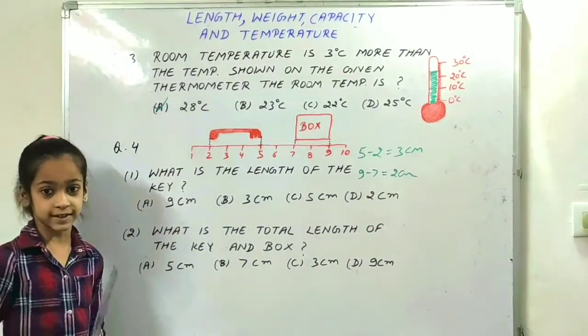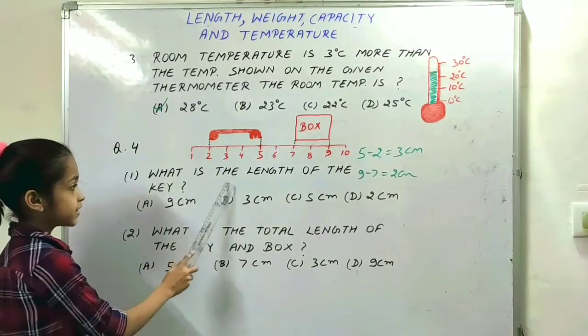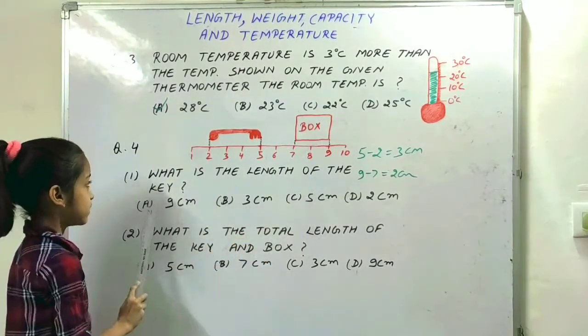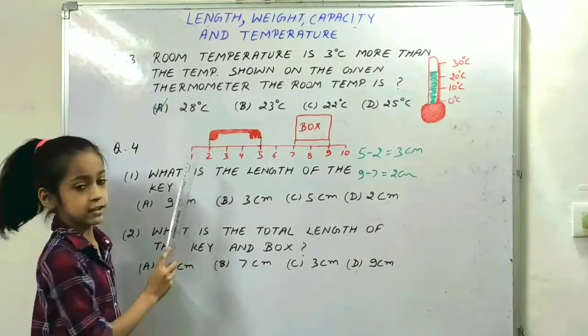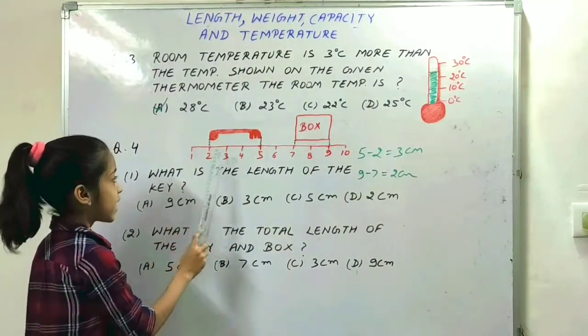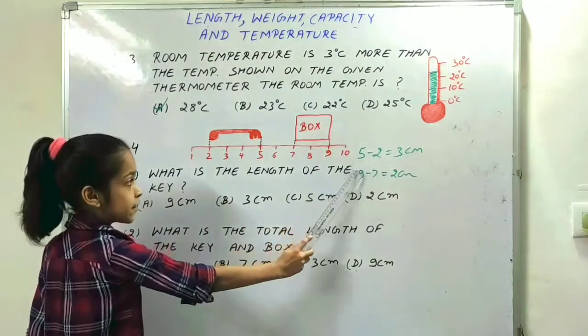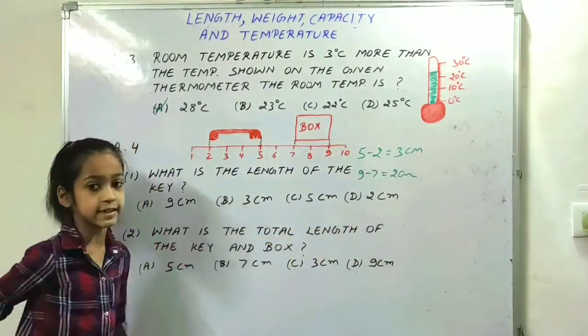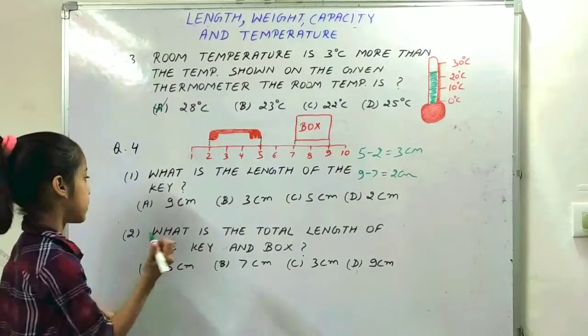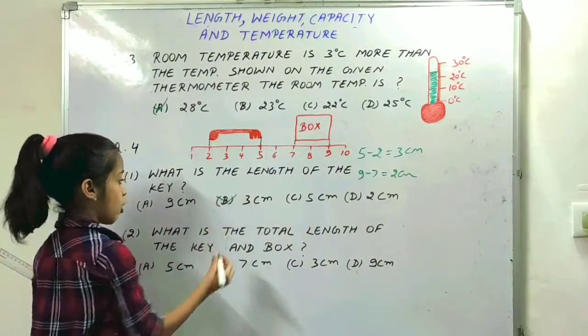Our next question is: what is the length of the key? Here is the key. The key starts from 2 and ends on 5. So 5 minus 2 is equal to 3 centimeters. Option B is the right option.